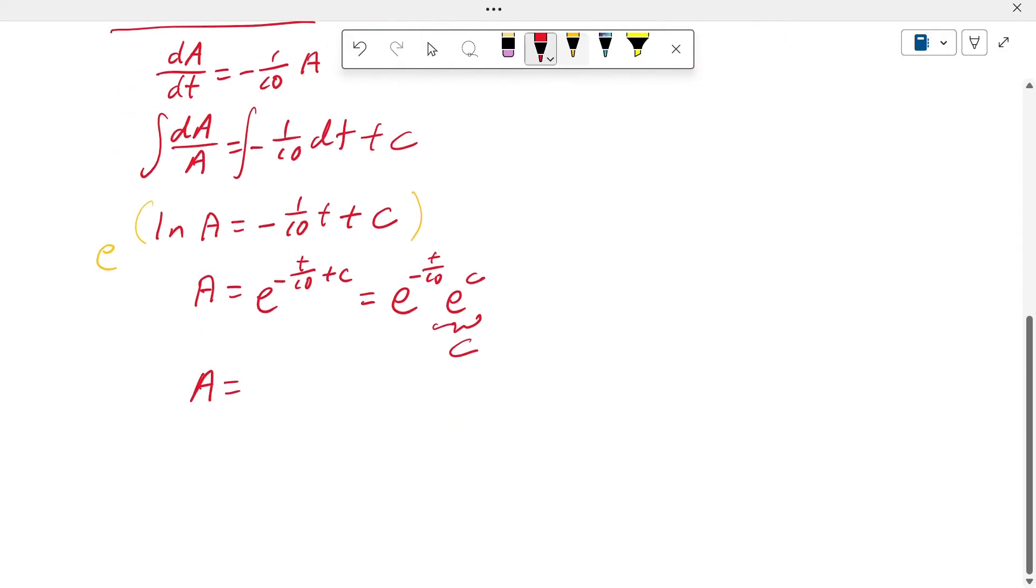And then we can represent this C with one arbitrary constant. Let's say it's C. So at the end, the salt in the tank is equivalent to C exponential minus T divided by 10.